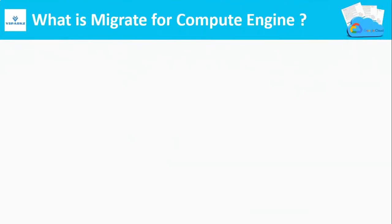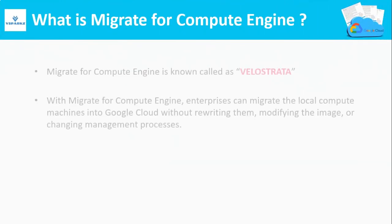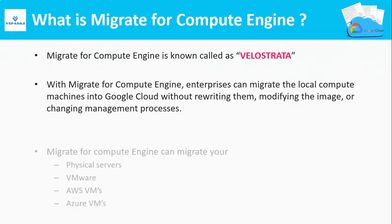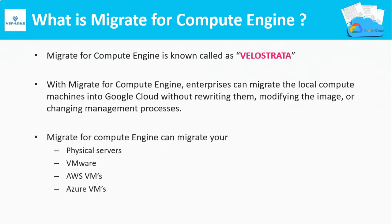What is Migrate for Compute Engine? Migrate for Compute Engine is also called as Velostrata. With this product, you can migrate your local compute machines to Google Cloud Platform without changing or modifying your underlying local machine or compute. With Migrate for Compute Engine, you can migrate your physical servers, VMware VMs, AWS EC2 VMs and Azure VMs as well.